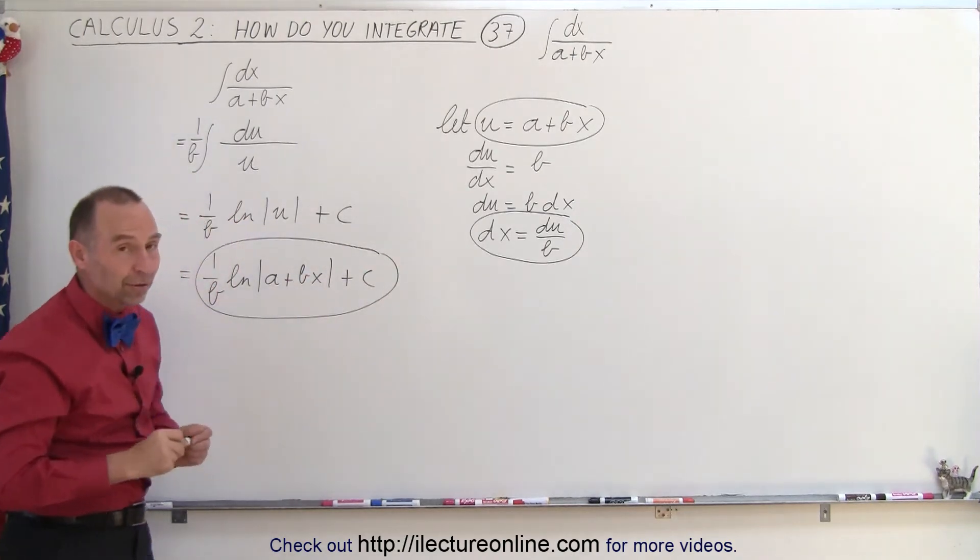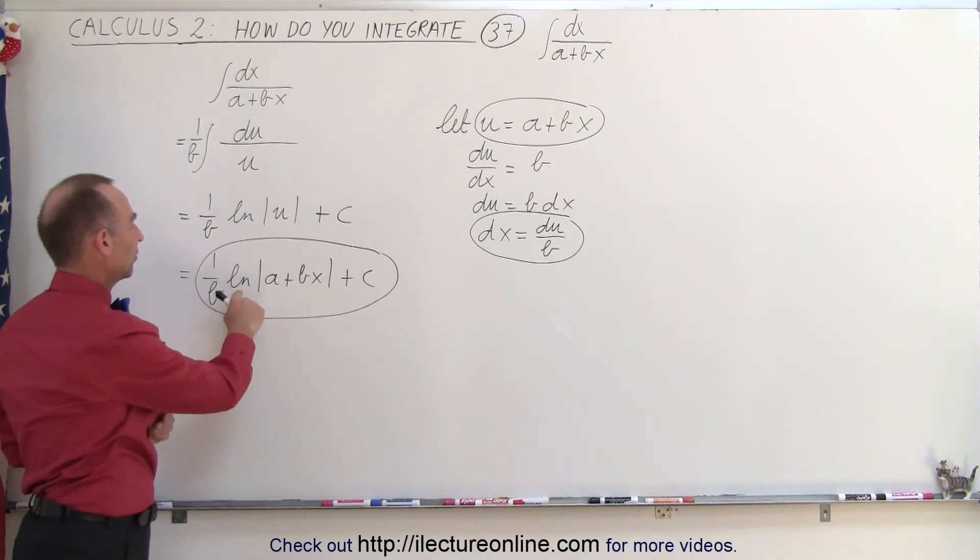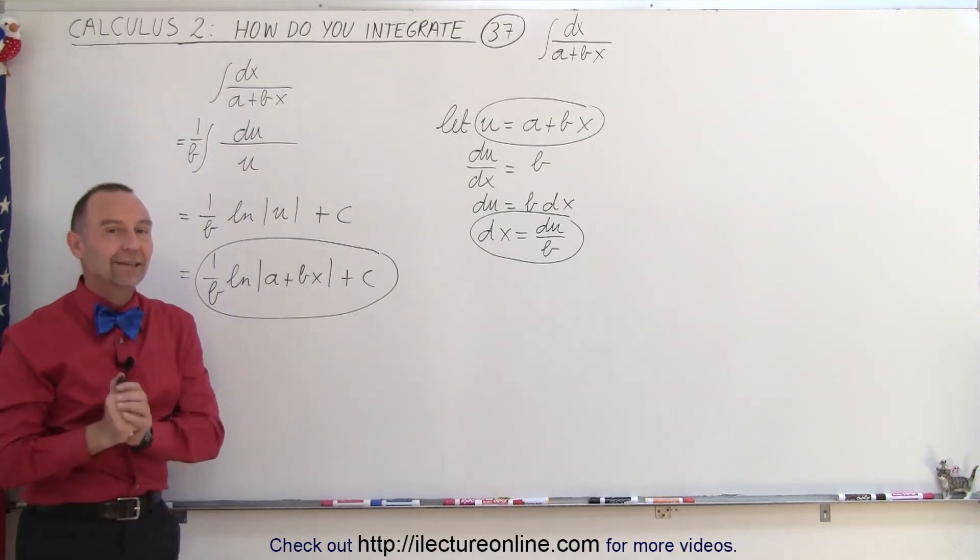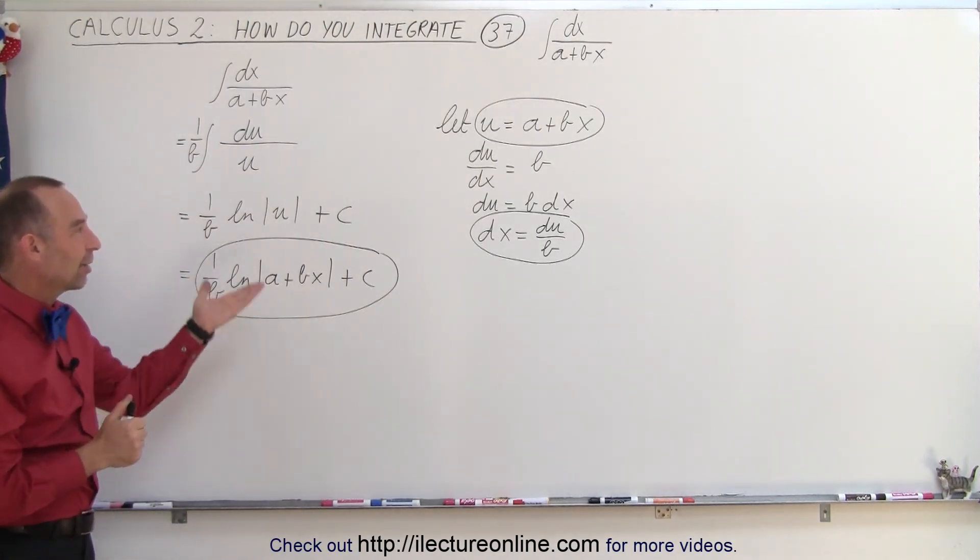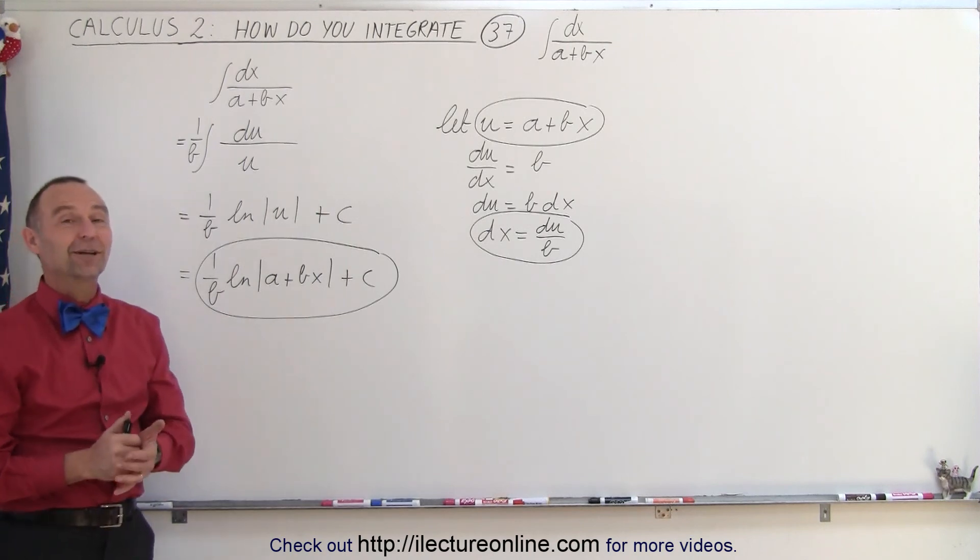Of course, we use the absolute value symbols just to indicate that the answer here cannot be a negative quantity because the natural log of a negative number is not defined. That's how we end up integrating that. That's an easy case. They do get a little harder in the next several videos, but that's how it's done.